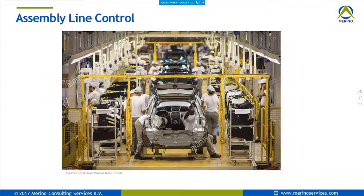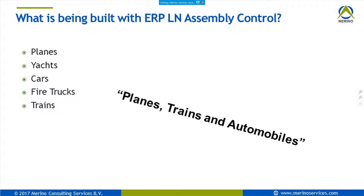What do we build with ERP LN assembly control? Basically: planes, boats, yachts, cars, fire trucks, and trains with ERP LN assembly control. I know there are people on this call who would say more is being built with assembly control — and you can imagine what else can be built on an assembly line.